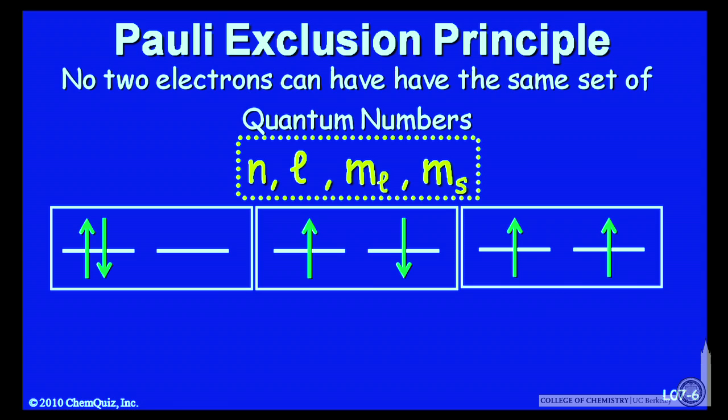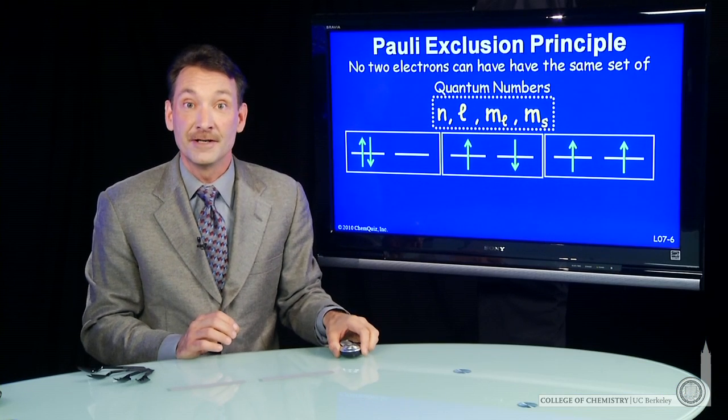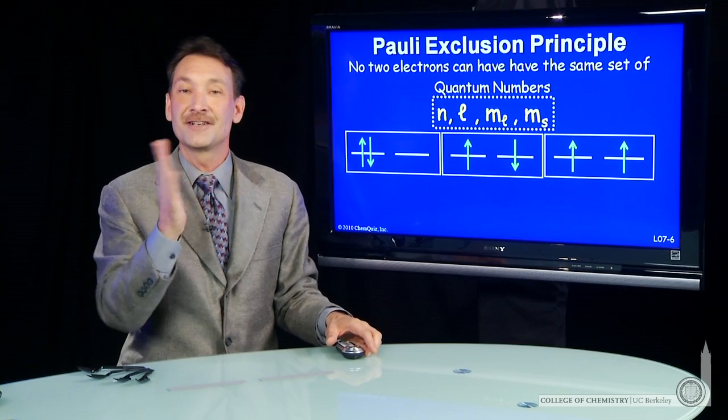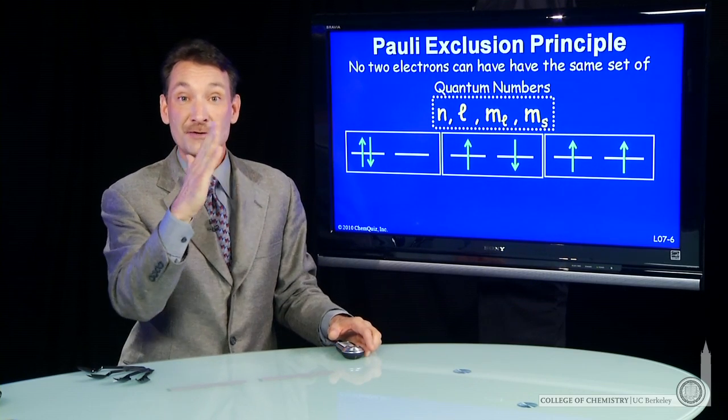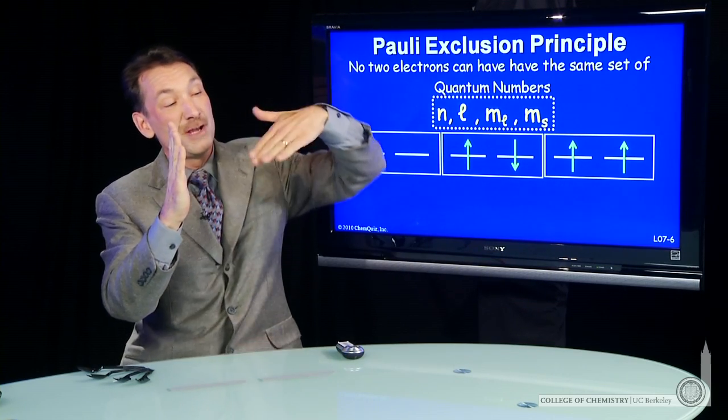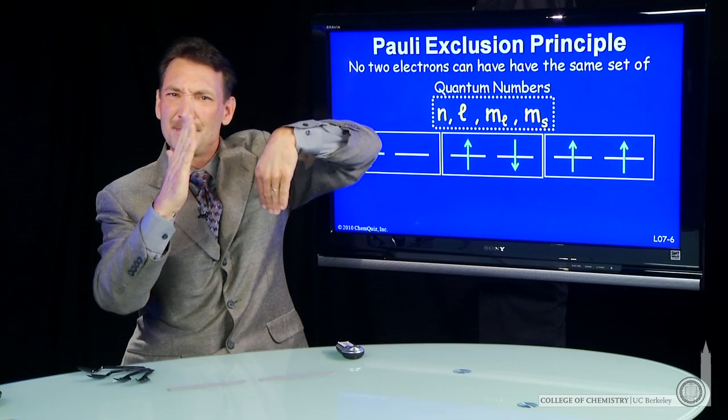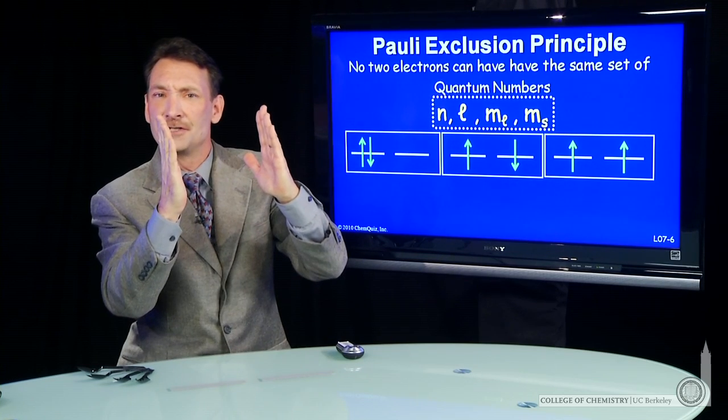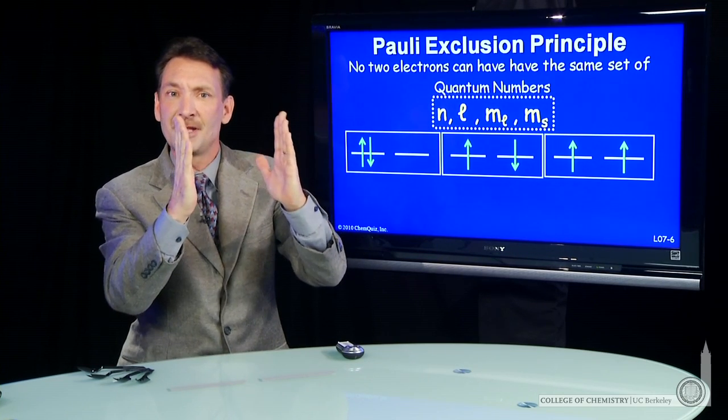Now, you might think that the parallel orientation would be favored because the electrons, remember, behave like they're little magnets. So if one goes in this way, having one go in this way would have them anti-parallel. And a lower energy orientation is to have them lined up with each other.